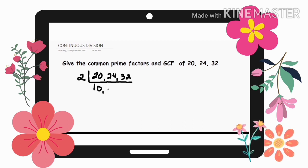24 divided by 2 is 12. Then, 32 divided by 2 is 16. Okay. So, ay continue natin yung process. Isip ka uli ng prime number na divisible itong 10, 12, at 16. So, again, they are divisible by 2. So, 10 divided by 2 is 5. 12 divided by 2 is 6. And 16 divided by 2 is 8.